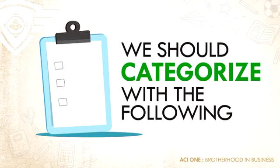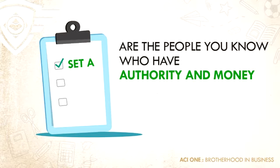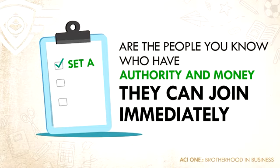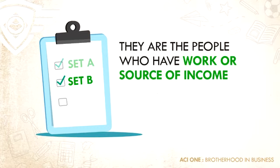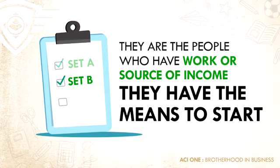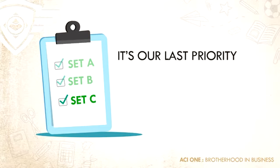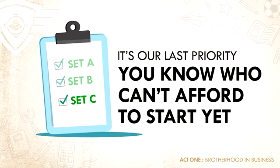We should categorize it with the following. Set A are the people you know that have authority and money — meaning when they like the business, they can join immediately. Set B are people who have work or a source of income; they can join because they have the means to start. Set C is our last priority: people you know who can't afford to start yet.